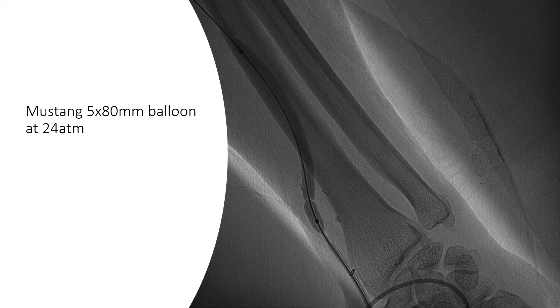We were able to then come back to the vein and do further pre-dilation. We tried a 5 mm Mustang balloon at 24 atmospheres, which still left a residual constriction, which you can see here quite clearly.